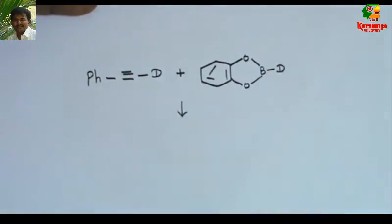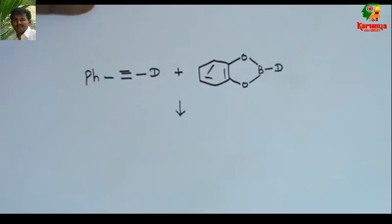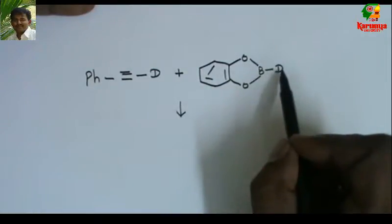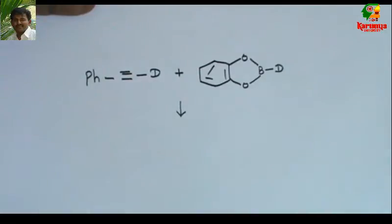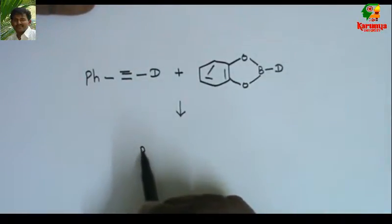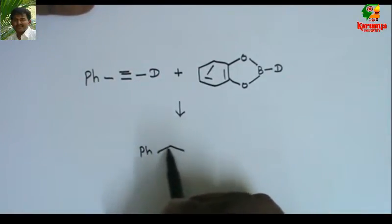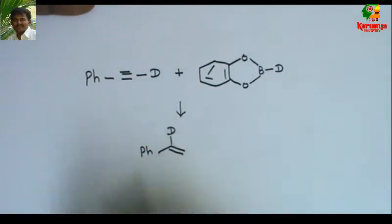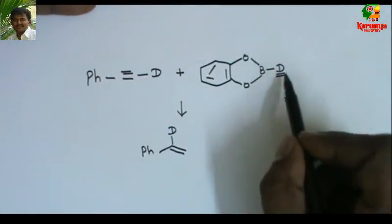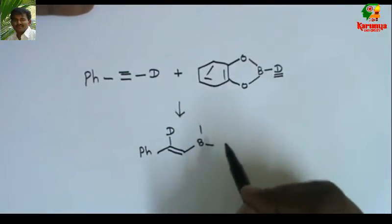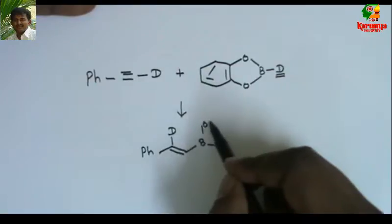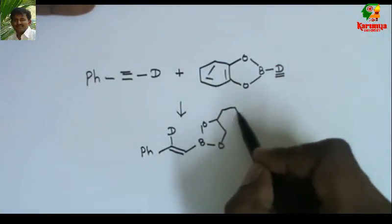The catechol borane adds to the phenylacetylene triple bond in a syn fashion — this is very important. That is, the deuterium and the boron will be on the same side. So what I get is: if deuterium is on this side, then this deuterium and the boron must both be on the same side.